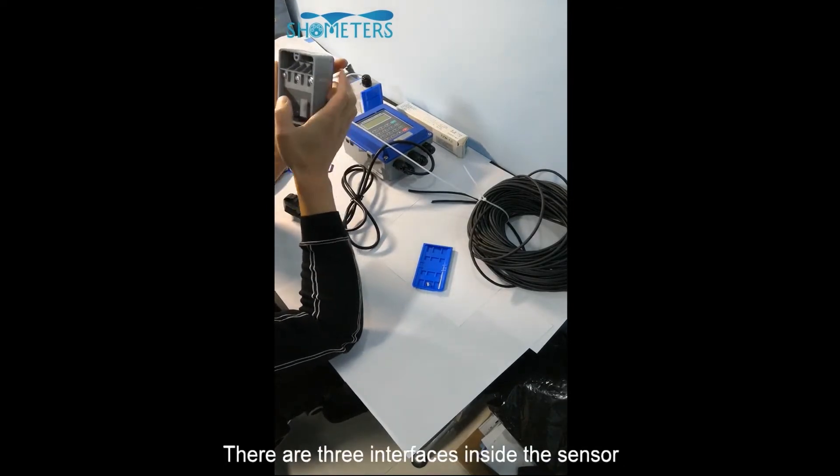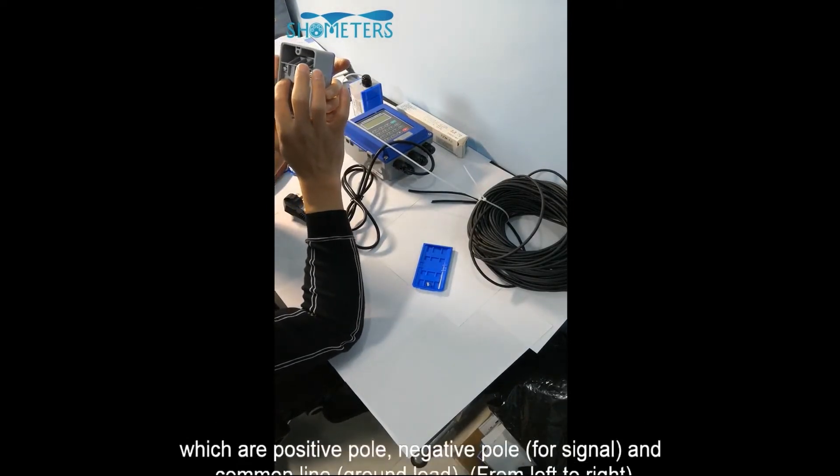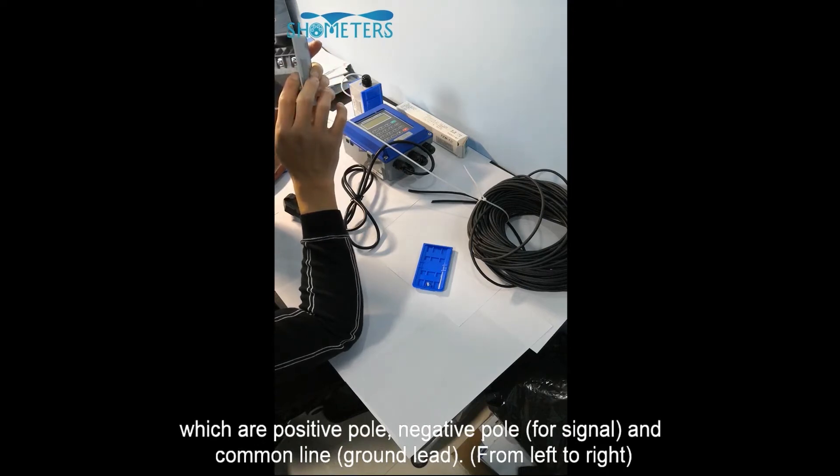There are three interfaces inside the sensor, which are positive pole, negative pole, and common line.